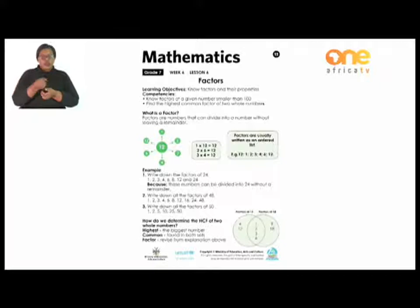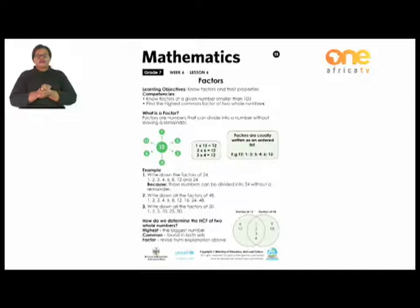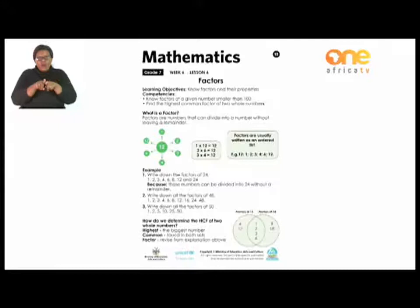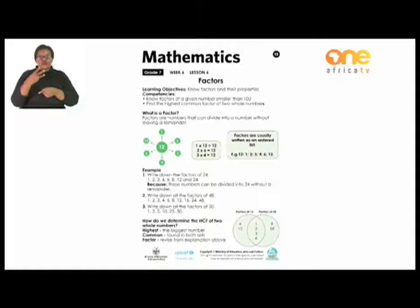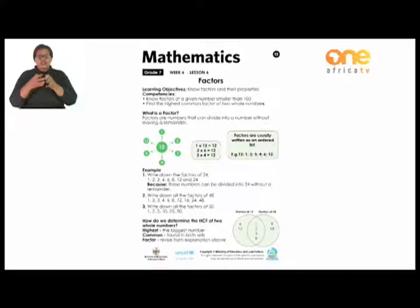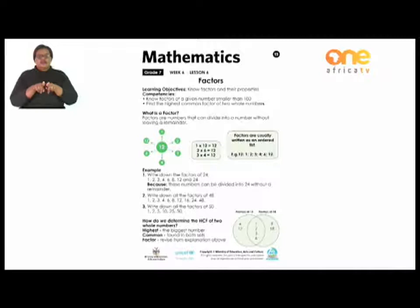If we take the factors of 12 and the factors of 18: the factors of 12 are 1, 2, 3, 4, 6, and 12. The factors of 18 are 1, 2, 3, 6, 9, and 18. The common factors — numbers found in both sets — are 1, 2, 3, and 6. The highest common factor, meaning the biggest number found in both sets, is 6. So 6 is our HCF.